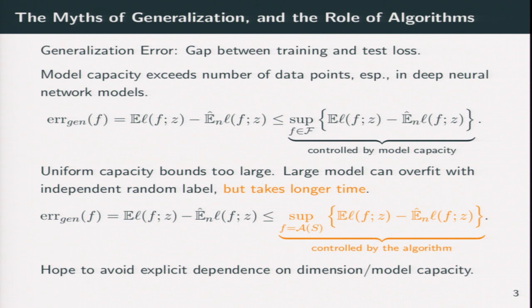But in their experiments, they also show that to fit those labels, you need to take longer time. This gives some intuition that the generalization error can be controlled by the algorithm itself in some dimension-independent way, or at least it doesn't need to have explicit dependence on the dimension of your problem and the model capacity.